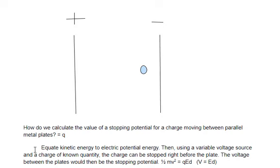So how do we do that? We'll equate the kinetic energy to electric potential energy. Use a variable voltage source to stop it just before and make sure all of the kinetic energy converts to electric potential just before it gets to that plate.